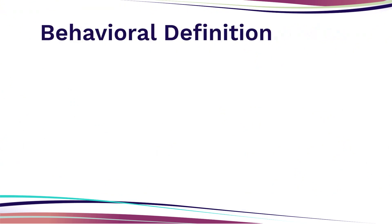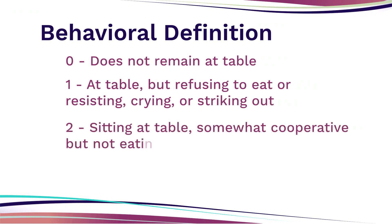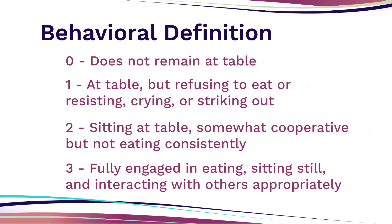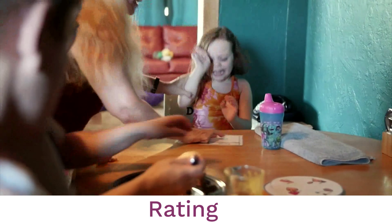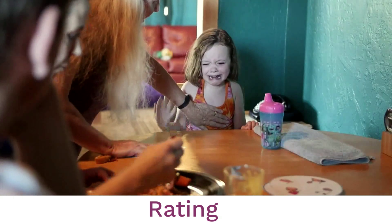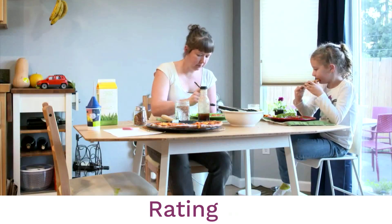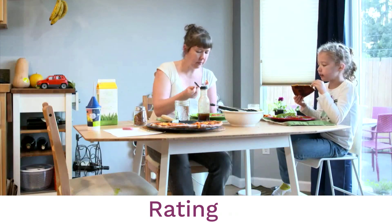In the following videos, we are going to rate cooperation with meals. Rate zero if the child does not remain at the table; one if she resists, cries, or is aggressive and does not eat; two if she is somewhat cooperative but not eating; and three if she's fully engaged in eating and behaving appropriately. How would you rate this child's eating? I would say a one. Now how about this girl? I would rate her behavior a three.